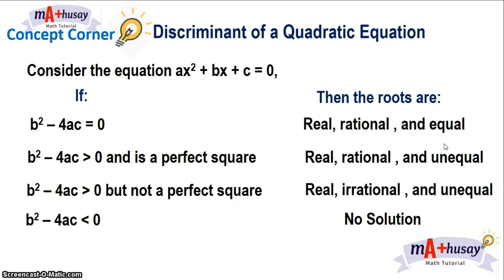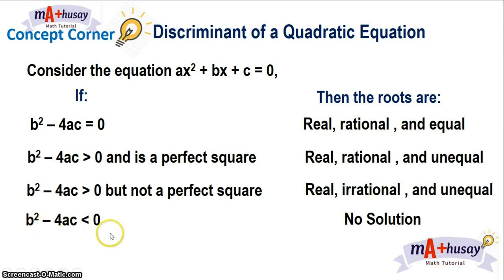Remember these four cases. If the discriminant b² − 4ac is equal to zero, the roots are real, rational, and equal. If the discriminant is greater than zero and a perfect square, the roots are real, rational, and unequal. If it is greater than zero but not a perfect square, the roots are real, irrational, and unequal. If the discriminant is less than zero, there is no solution to the quadratic equation.